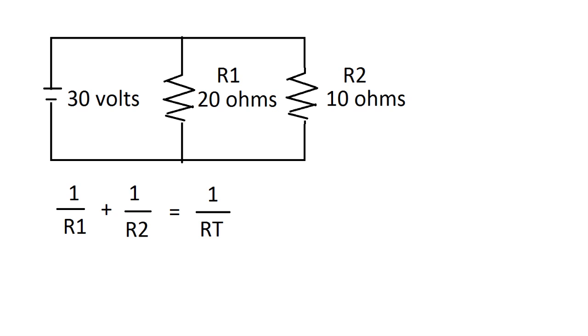1 over resistance total is equal to 1 over R1 plus 1 over R2. So if we take 1 over 10 plus 1 over 20, we get 3 over 20. Which then we want to take the inverse over that, so we take 1 over 3 over 20, and we get 6 and 2 thirds ohms for resistance total.